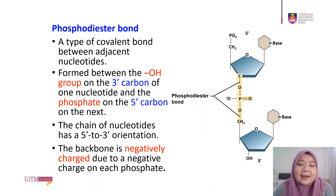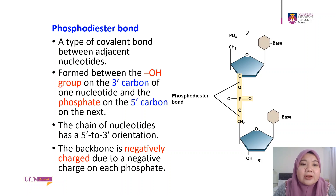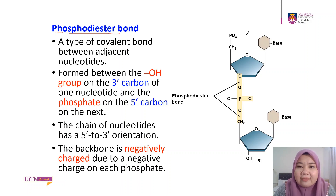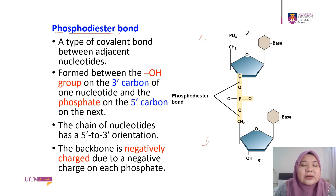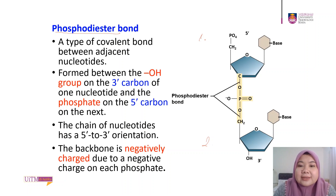Now we're going to look at the covalent bond that attaches all the nucleotides together in a polynucleotide strand. The name of this covalent bond is the phosphodiester bond — a type of covalent bond between adjacent nucleotides. We have two adjacent nucleotides here; let's call them nucleotide 1 and nucleotide 2. The covalent bond forms between the hydroxyl group on the third carbon of one nucleotide and the phosphate on the fifth carbon of the next.